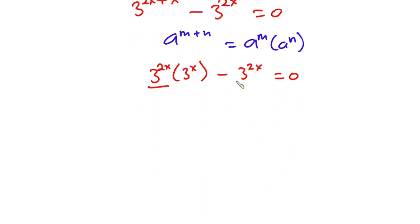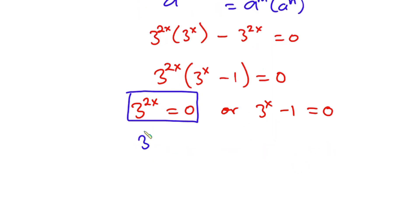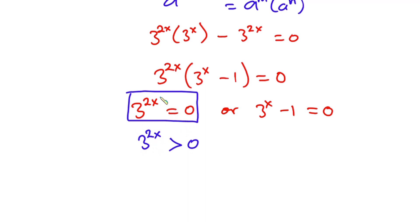We have 3 to the power 2x appearing in both terms, so we can factor it out. We get 3 to the power 2x times the quantity 3 to the power x minus 1, equals 0. At this point, either 3 to the power 2x equals 0, or 3 to the power x minus 1 equals 0. Now, 3 to the power 2x is always greater than 0 — increasing x makes it larger, and decreasing x makes it smaller but never reaches 0. So that equation has no solution.